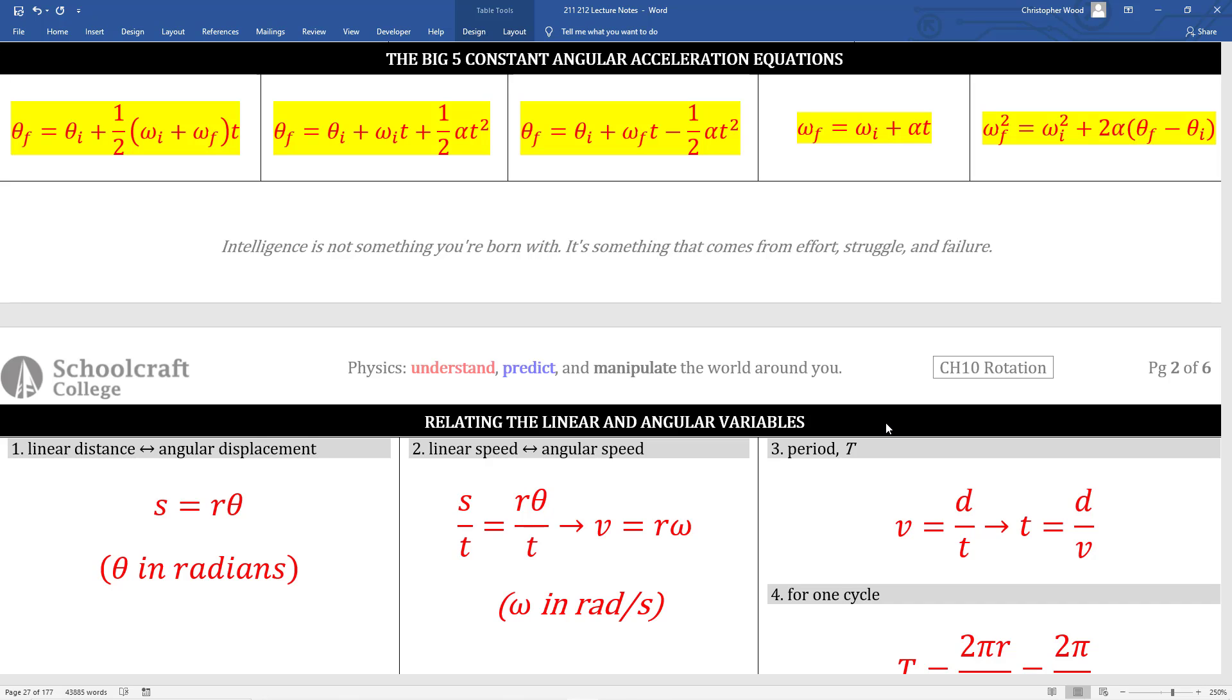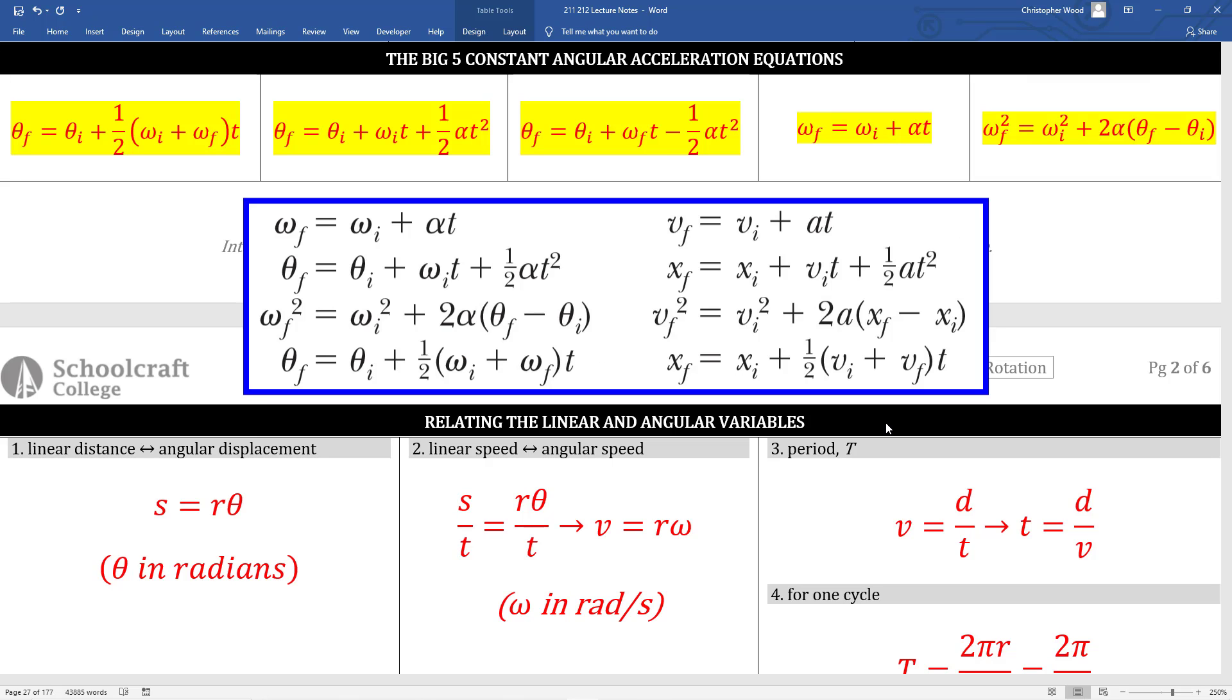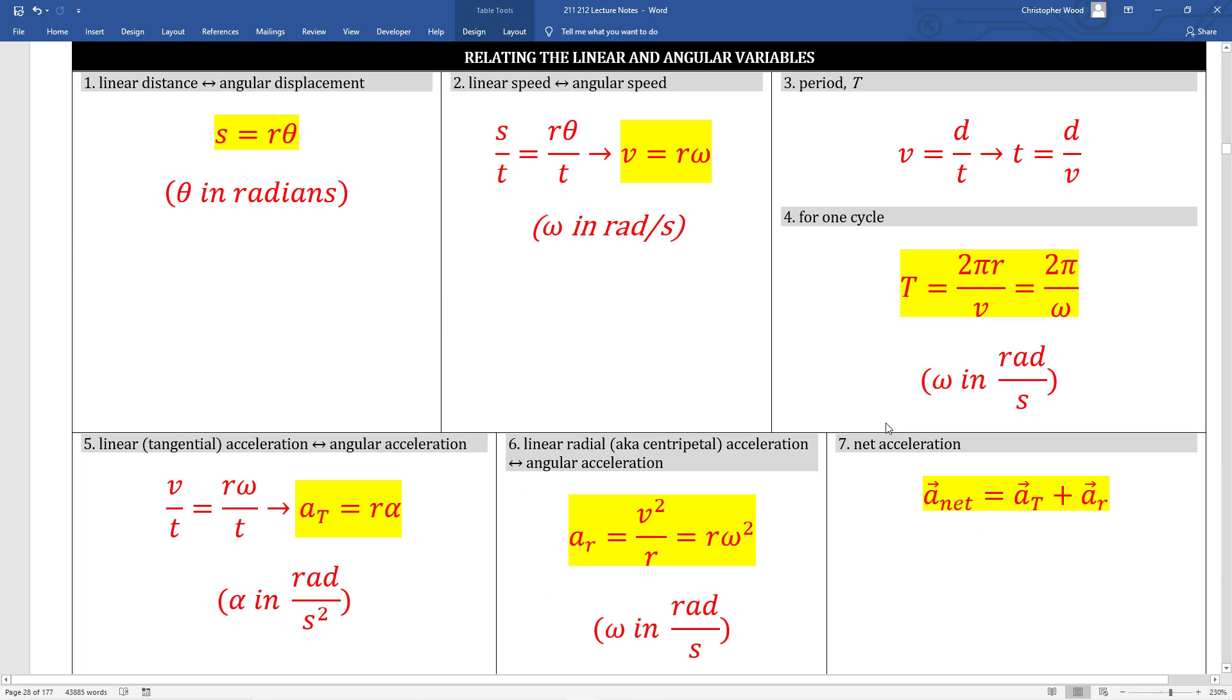If you're dealing with a situation where you know the angular acceleration is constant, you get to work with the big 5 again. Here are the same big 5 equations modified to represent angular variables. There is a linkage between the linear world and the angular world.